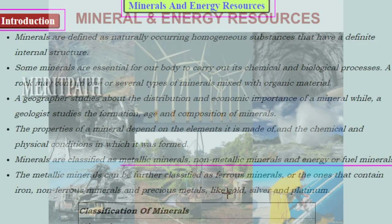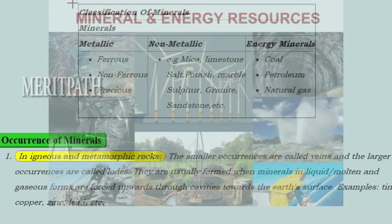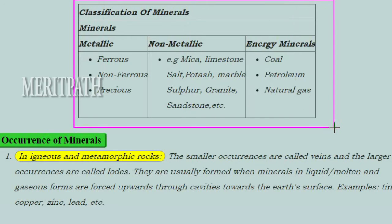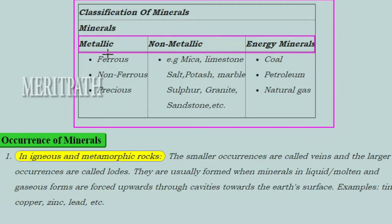The classification of minerals includes: metallic (ferrous, non-ferrous, and precious metals), non-metallic (examples: mica, limestone, salt, potash, marble, sulfur, granite, sandstone), and energy or fuel minerals (coal, petroleum, natural gas). Now let's see the occurrence of minerals.